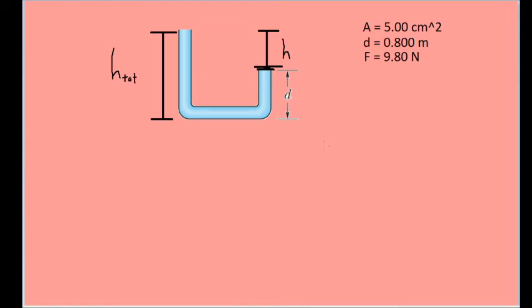To make this situation more clear and easier to work with, let's define some additional variables other than the ones the problem gives us. The value we're looking for is the total height of the water in the left arm of the tube, so let's call that H subtotal or tote.